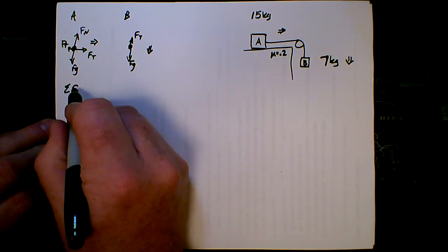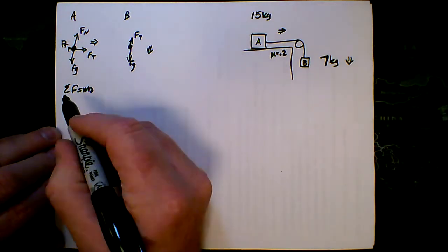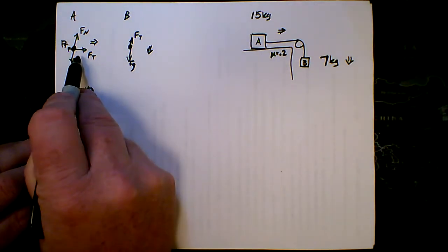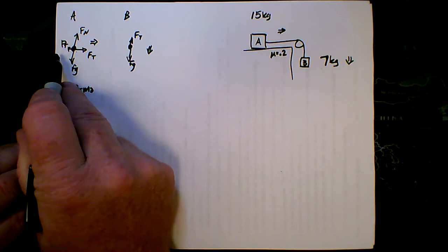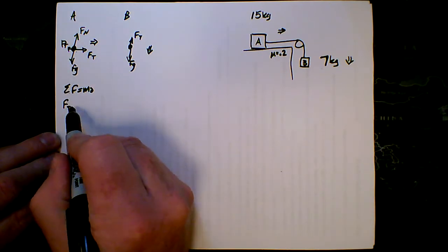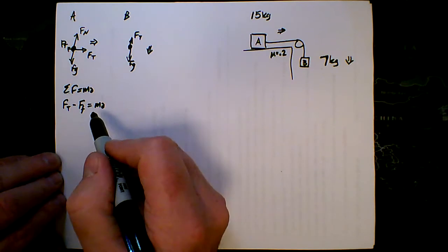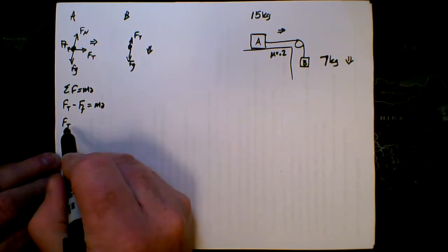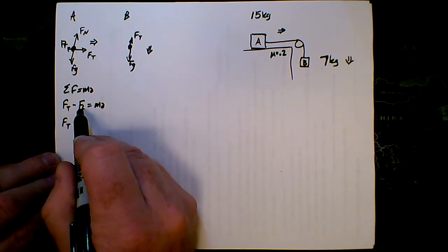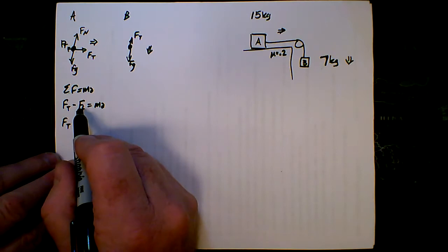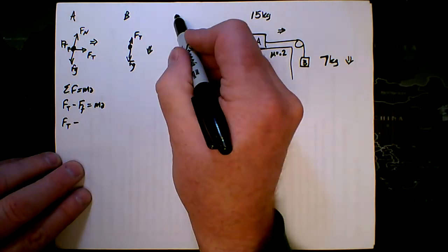So for block A, we would do our net force equals mass times acceleration. Our net force here, go minus stop. We've got FT minus FF. The tension force minus the friction force, that's right minus left, equals MA. So now we plug in our numbers that we know, don't know the tension, friction. I don't know the friction, but I can find the friction.